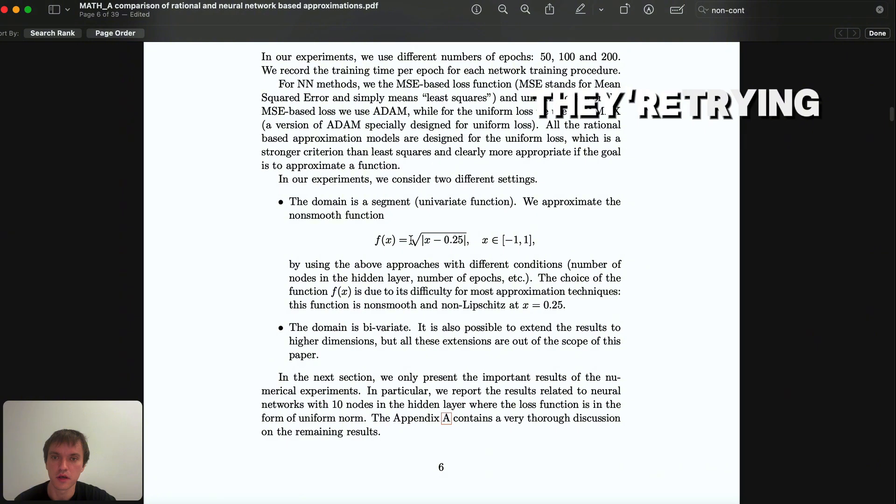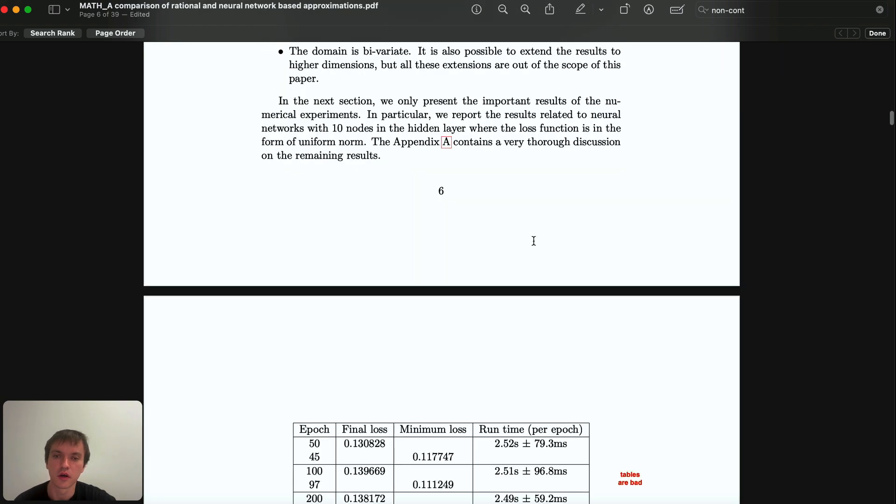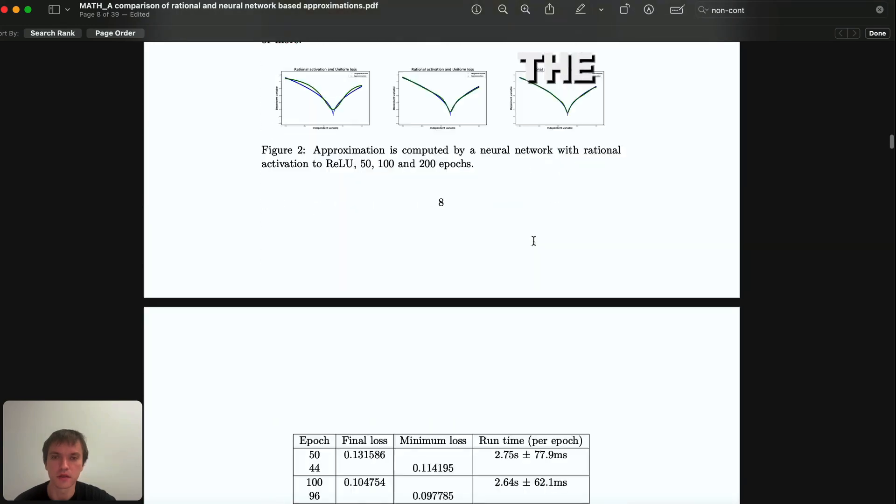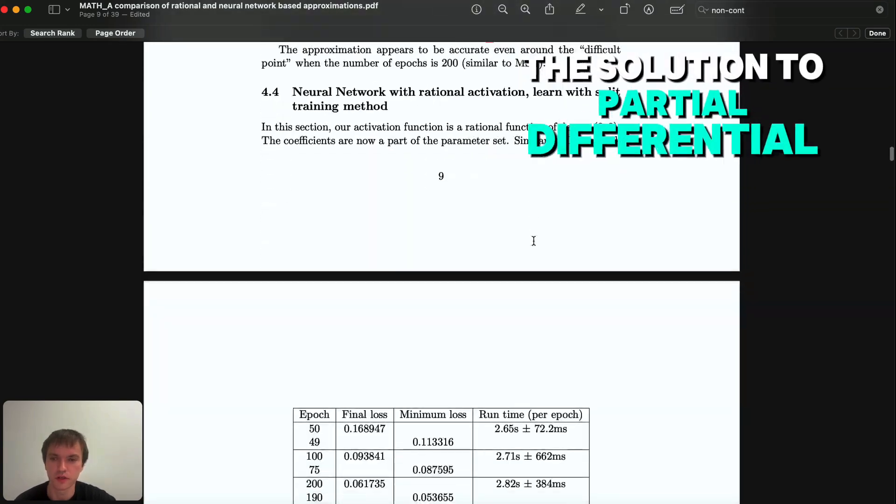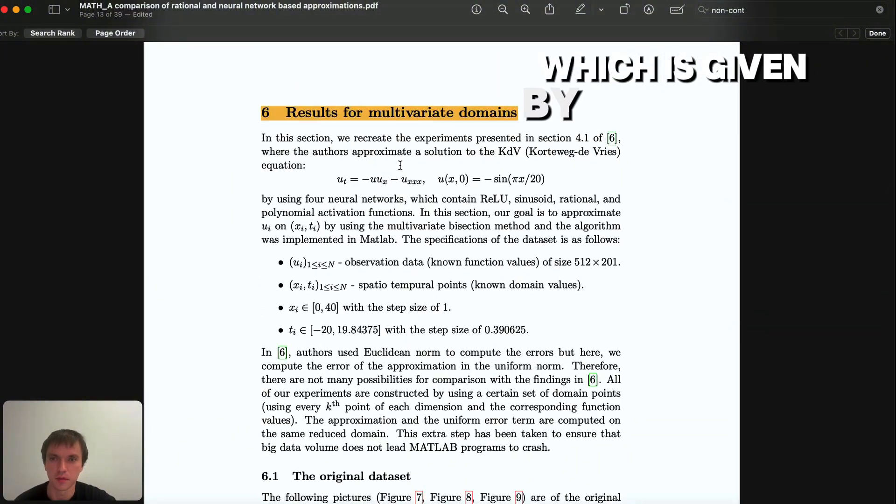What they're trying to do is approximate either this function: absolute value of square root of absolute value of x minus one-fourth on the interval between negative 1 and 1, or they approximate the solution to a partial differential equation.